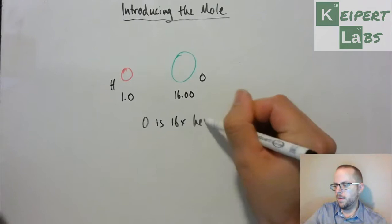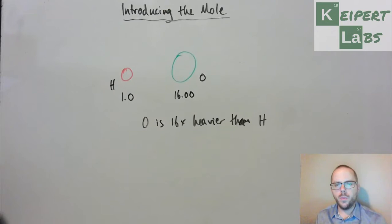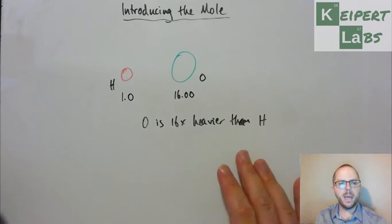So therefore saying that oxygen is 16 times heavier than hydrogen. And so what we can say then is, this is our relative mass.